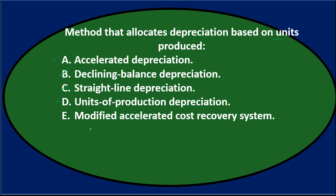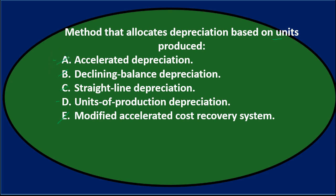E, modified accelerated cost recovery system — that's typically used in the tax code and again uses time, not units. So we're left with A and D. Accelerated depreciation doesn't have to use a units method — for example, declining balance is accelerated and doesn't use units. So the answer is D, units of production depreciation.